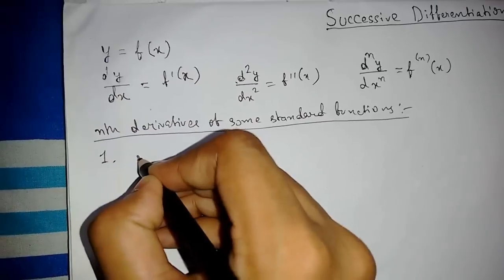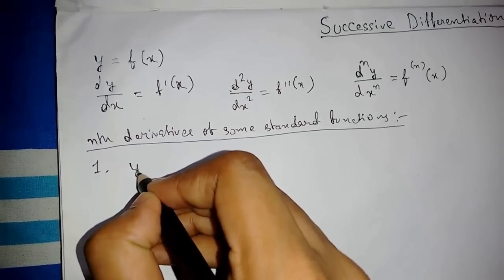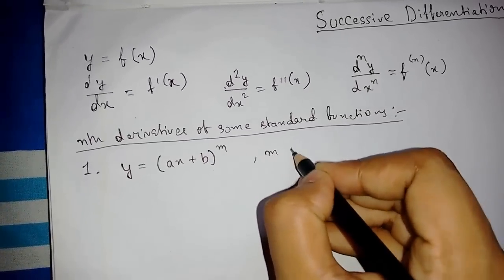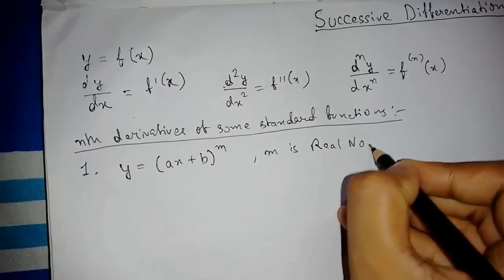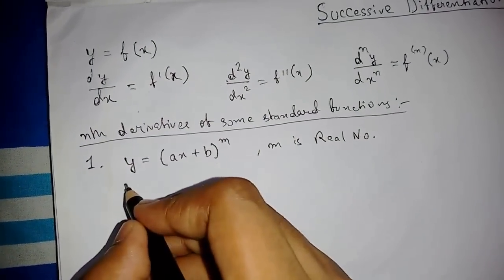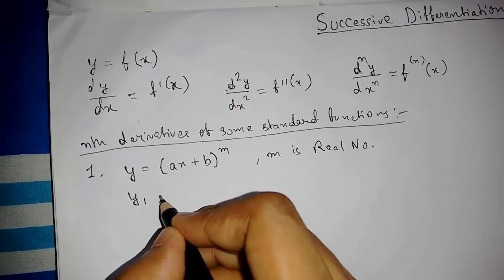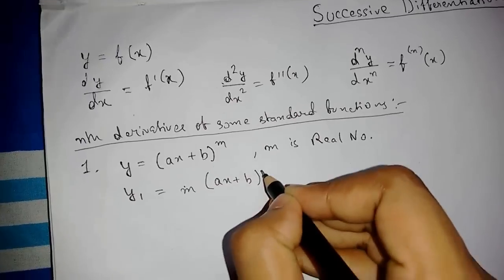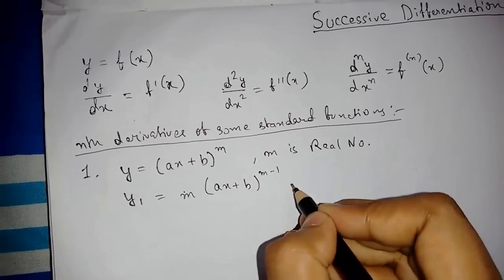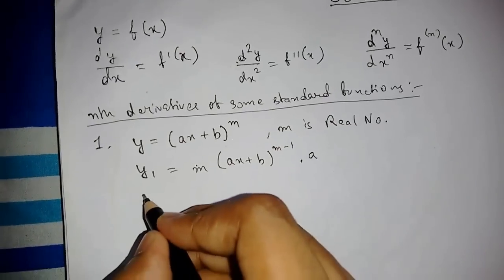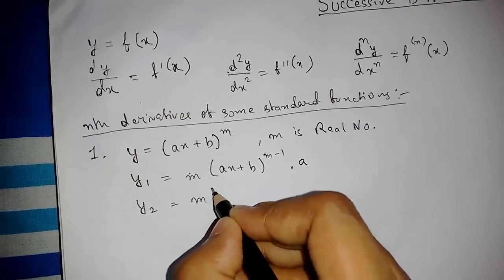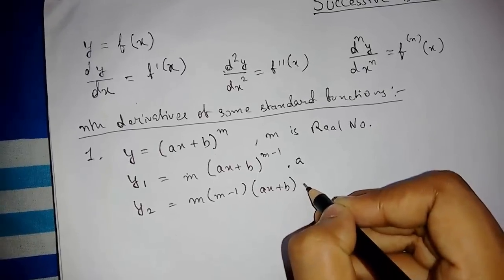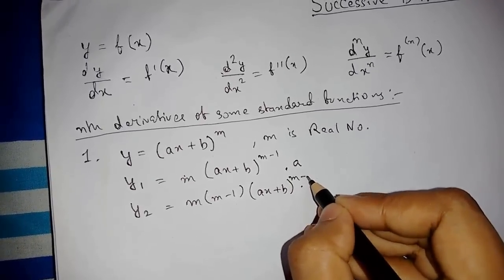Our first formula: y equals to (ax + b)^m, where m is a real number. Let's differentiate it. So y₁ — the first order differentiation — will be m times (ax + b)^(m−1) times a. Now calculating y₂: this will be m(m−1) times (ax + b)^(m−2) times a².